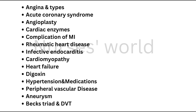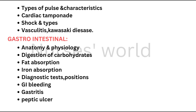Hypertension and medication. Peripheral vascular disease — types and treatment. Aneurysm, Beck's triad, and DVT. Types of pulse and characteristics — very important MCQ. Cardiac tamponade, shock and its types, vasculitis, and Kawasaki disease.